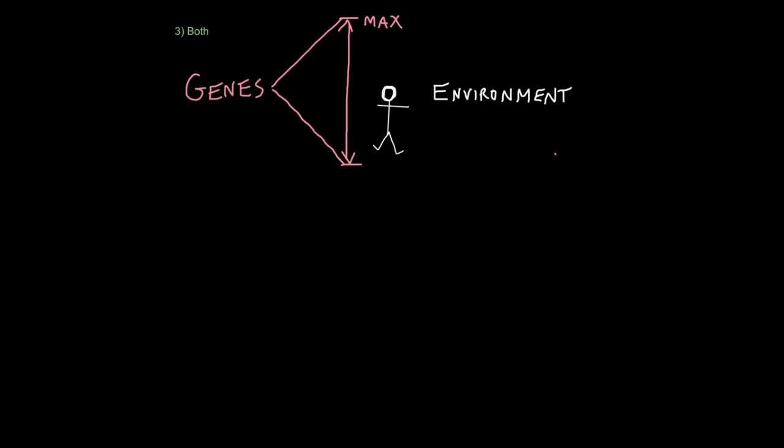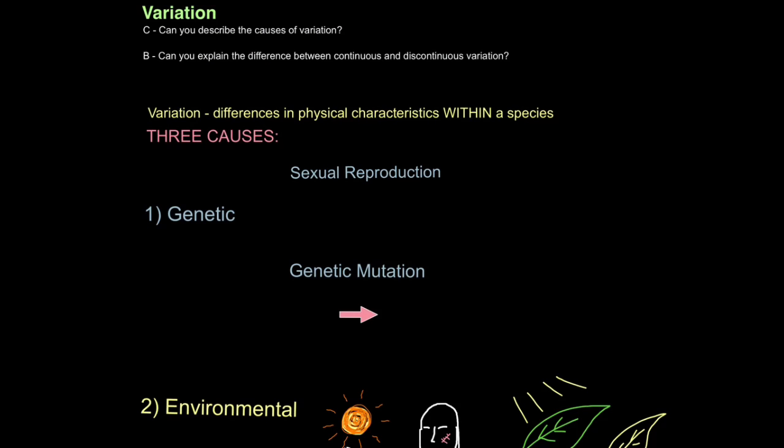Weight is another really good example of how genes and environmental factors interact to bring about a characteristic. So your genes, your environment, and a combination of the two are the main causes of variation.